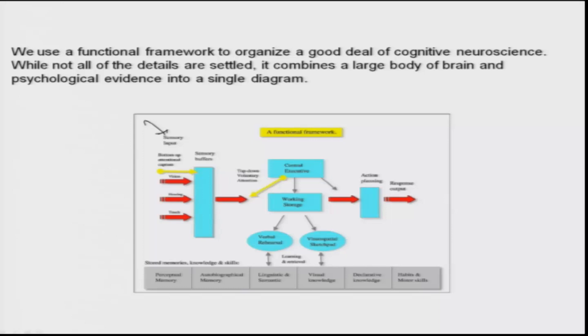This is a functional framework just to broadly understand. There is sensory input here - vision, hearing, touch - these are sensory buffers. This is perceptual memory, what you have seen. Top-down voluntary attention. This is storage, this is a verbal rehearser, this is a visual spatial sketch pad. It goes to a central executive which decides on action planning, and this is response output.